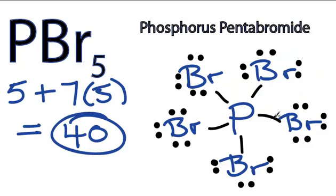And the phosphorus has 2, 4, 6, 8, 10 valence electrons, but that's going to be okay. It's in period 3, or row 3 of the periodic table, so it can have more than 8 valence electrons.